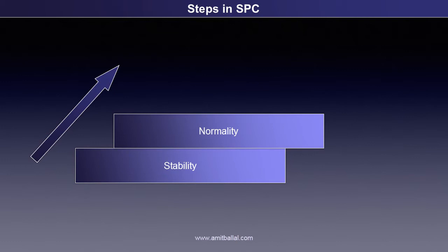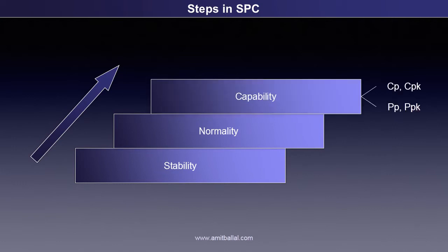Once the process is stable, the next step in SPC is to check for normality. If the process is stable, it doesn't necessarily mean it is normal. And unless the process is normal, process capability — that is CP, CPK — or process performance — that is PP, PPK — calculation is irrelevant, since these indices assume the process is normal in the first place.